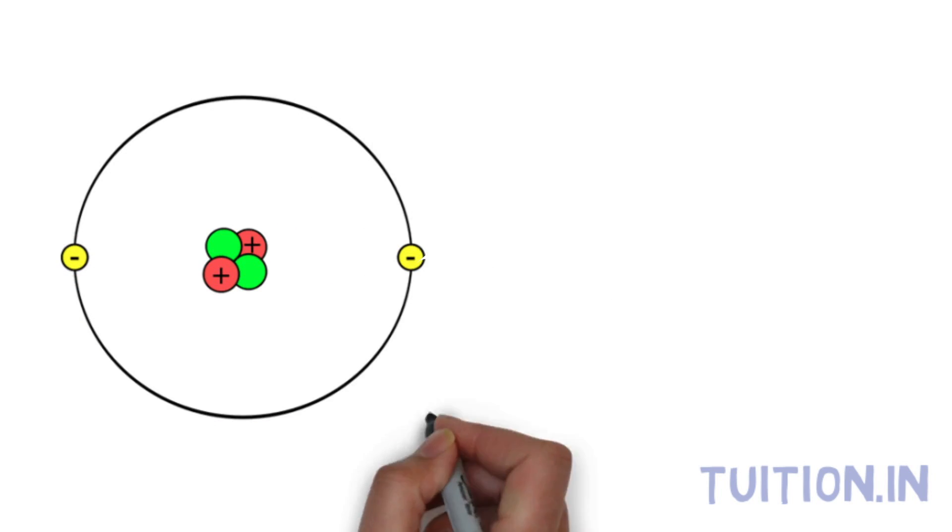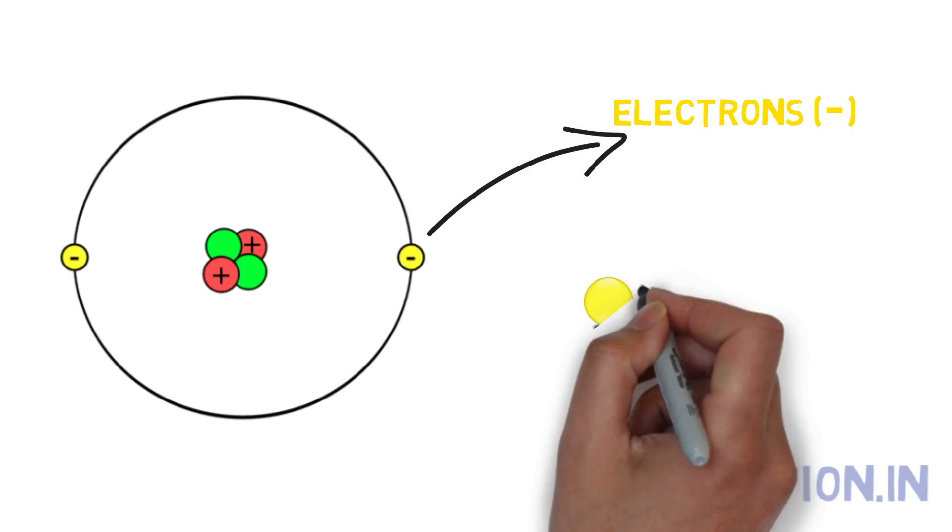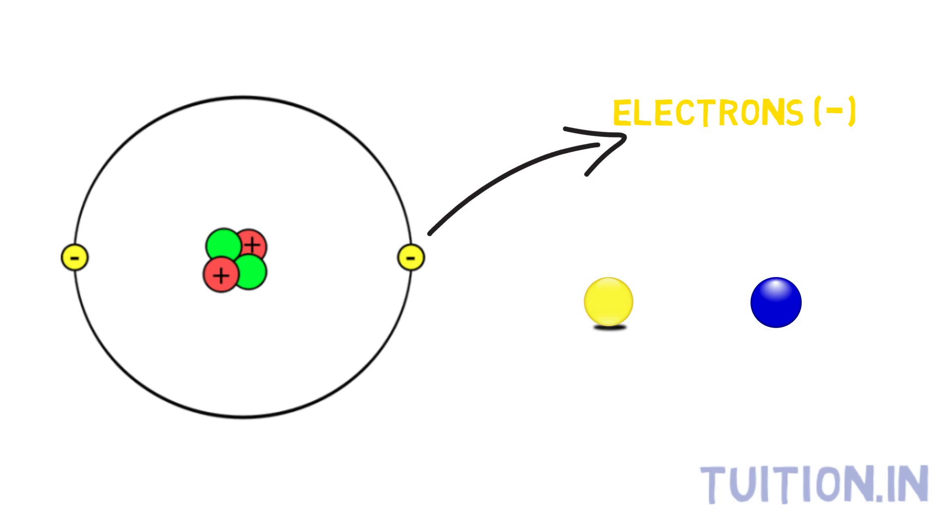Revolving around the nucleus like the planets around the sun are the negatively charged particles called electrons. Electrons and protons attract each other.